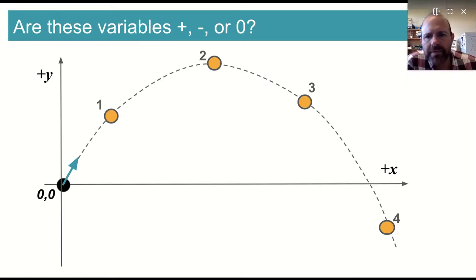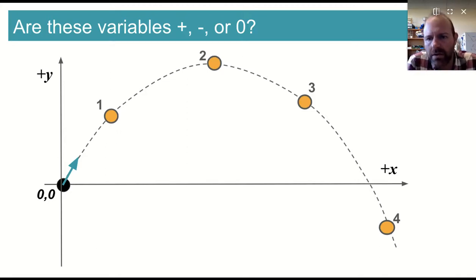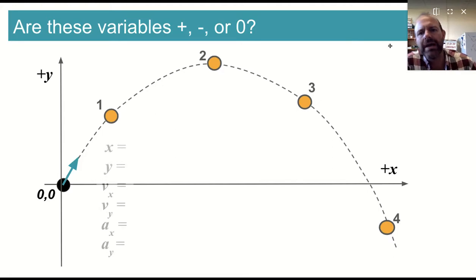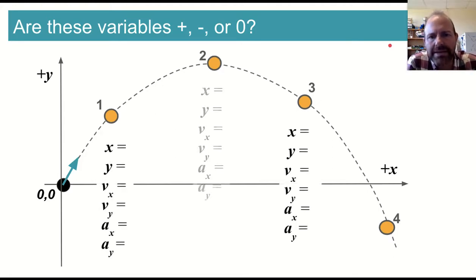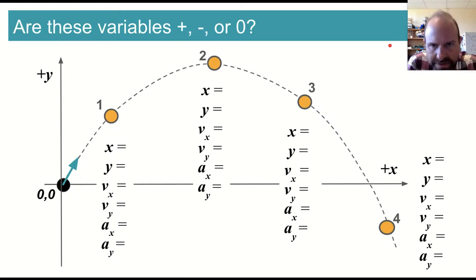If you imagine a projectile being launched from the origin, we have positive y up, positive x to the right, and we've highlighted a couple of points: 1, 2, 3, and 4 along the path. We could ask ourselves what is the x and y position, the x and y velocity, and the acceleration in x and y at each of these points.